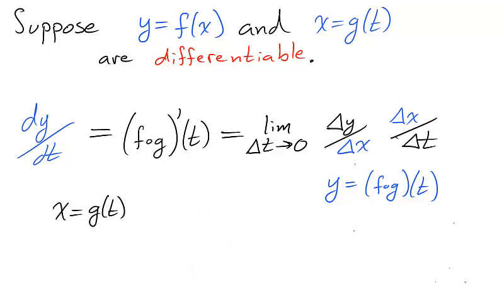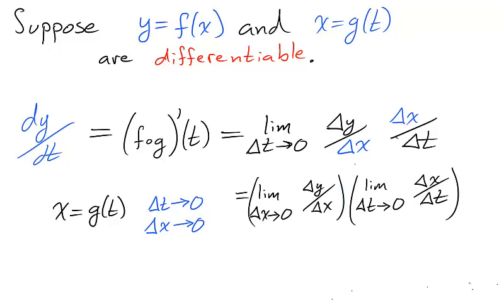Because the function g is differentiable, it is also continuous. Which means that as the change in t goes to 0, the change in x would also go to 0. Notice that the first limit is the derivative of f, and the second is the derivative of g.